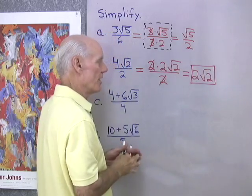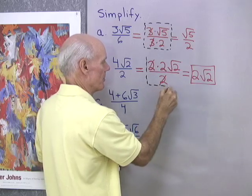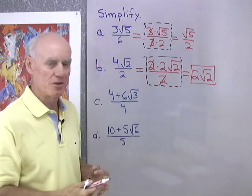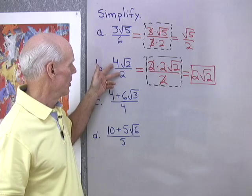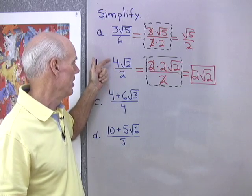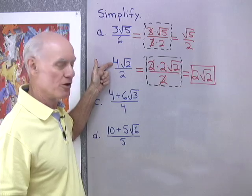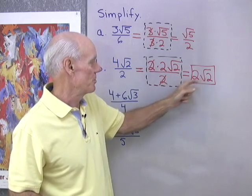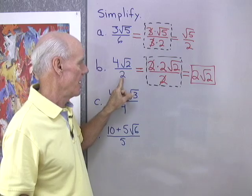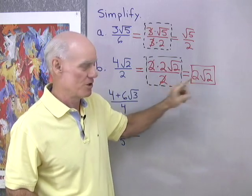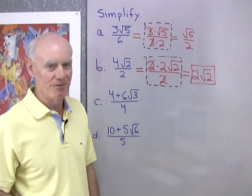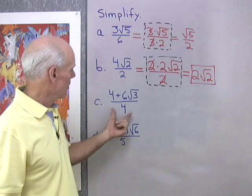And if you want, again, this is kind of a thinking step — maybe you don't show this step every time, but you think to yourself: look, I have a factor of 2 common to the numerator and denominator. When I divide the numerator by 2, I end up with 2 square root 2. When I divide the denominator by 2, I end up with 1, which means I can write it without that denominator of 1.